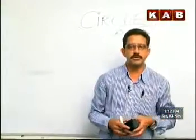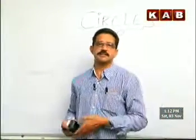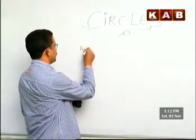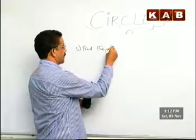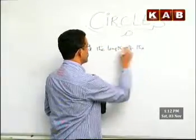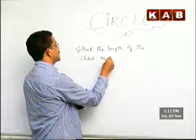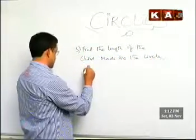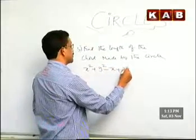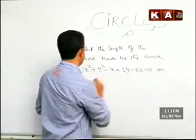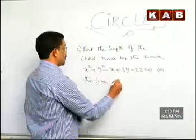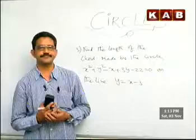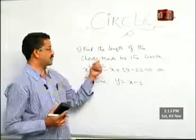We are giving you the solutions. Work out your solutions on those lines because out of experience we know how to write these questions. Now what he is telling is find the length of the chord — third question. Find the length of the chord made by the circle on the line y is equal to x minus 3. Please find the length of the chord made by the circle.